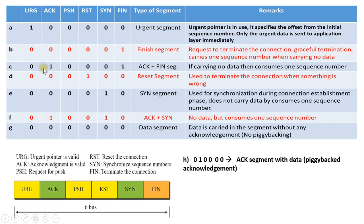The third bit pattern of the control flag is 0,1,0,0,0,1. The urgent flag bit is set to 0, the ACK flag bit is set to 1, push flag is set to 0, reset is set to 0, sync is set to 0, and finish flag is set to 1. So both ACK and finish flag bits are set to 1. Therefore, the type of segment is an ACK plus finish segment. If this segment carries no data, it consumes one sequence number.